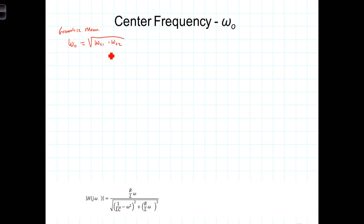So plugging in for omega-C1 and omega-C2, we get omega-C1 times omega-C2, all under the square root.